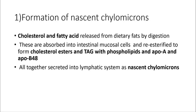The first lipoprotein, chylomicron, is formed after the digestion and absorption of lipids in our body. The first step is formation of nascent chylomicron. Cholesterol and fatty acids released from dietary fats by digestion are absorbed into intestinal mucosal cells and re-esterified to form cholesterol ester and triacylglycerol with phospholipids and two apolipoproteins, ApoA and ApoB48, all together secreted into the lymphatic system as nascent chylomicron.